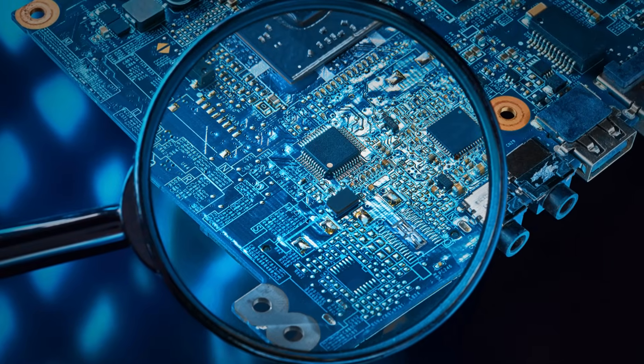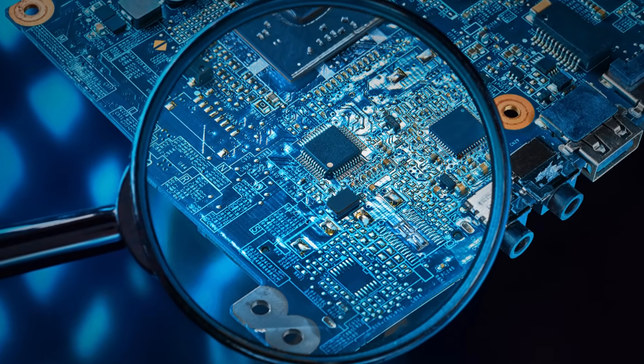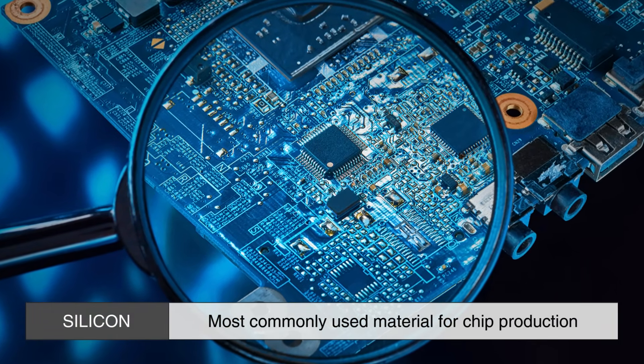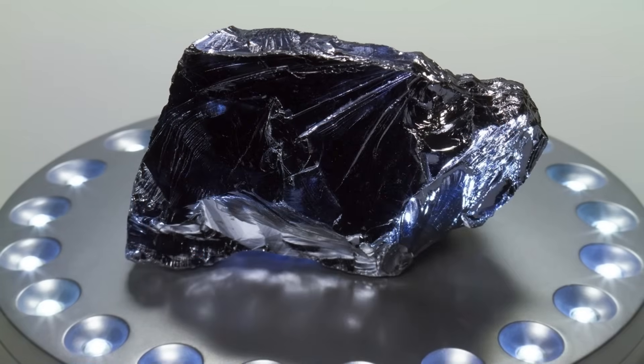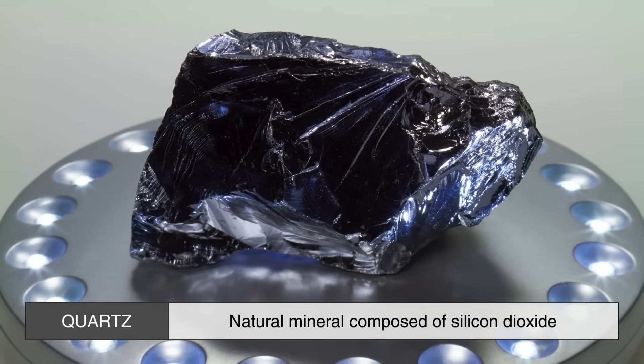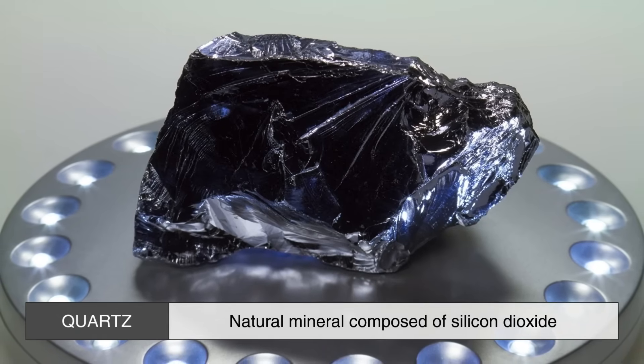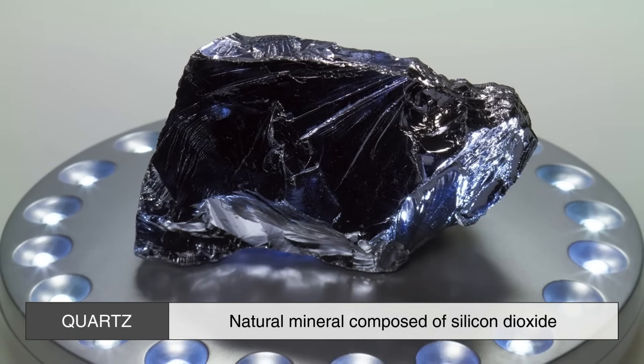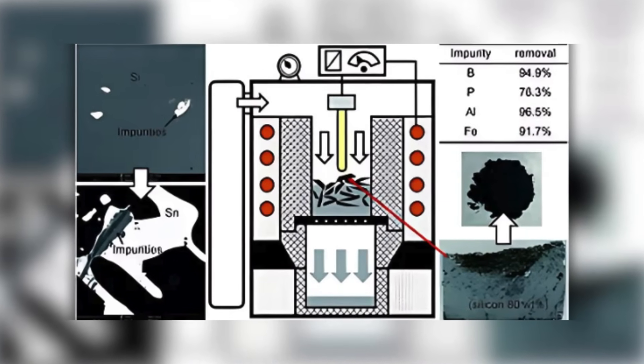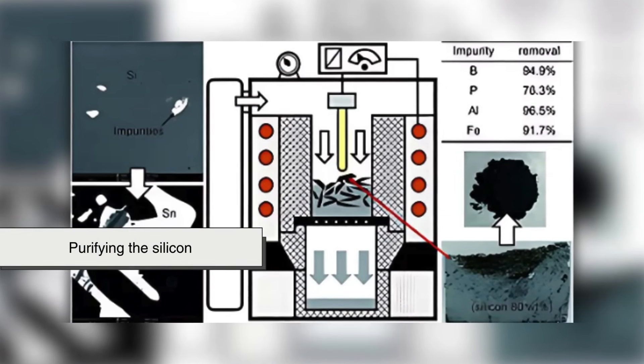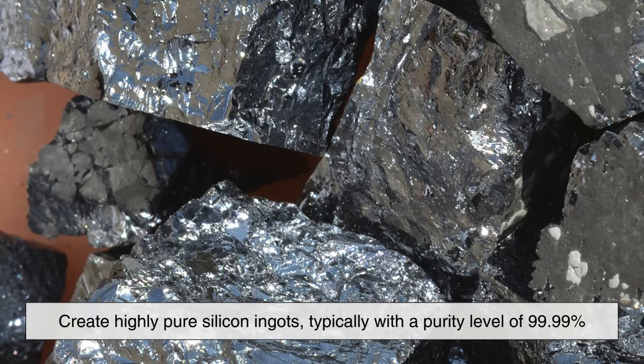The journey of a semiconductor chip begins with silicon, the most commonly used material for chip production. Silicon is derived from quartz, a natural mineral composed of silicon dioxide. The first step in the process is purifying the silicon to create highly pure silicon ingots, typically with a purity level of 99.99%.